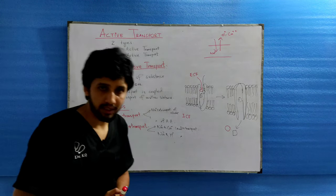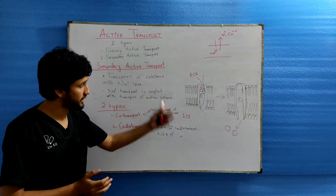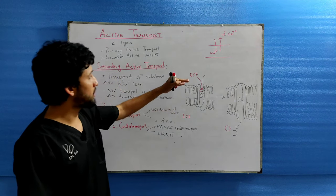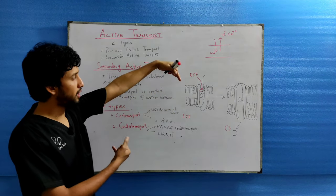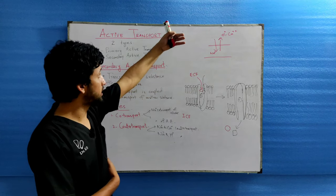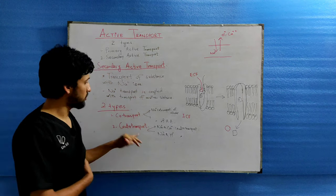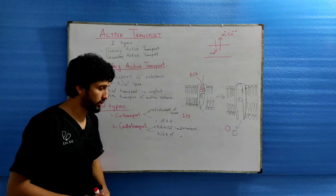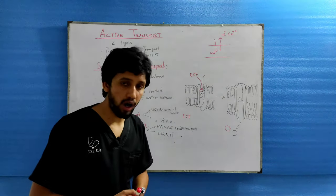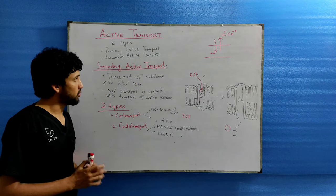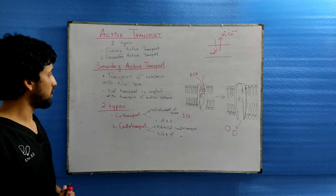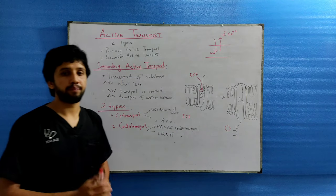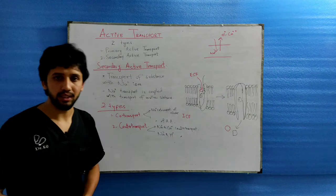These are the two types of secondary active transport — substances moving in the same direction or in the opposite direction. Sodium-glucose cotransport occurs in the normal reabsorption in the intestines. Sodium-hydrogen countertransport occurs in the renal tubule. Sodium-calcium countertransport occurs in almost every cell of the body. This is the cotransport and countertransport mechanism of secondary active transport, involving sodium transport along with another ion.